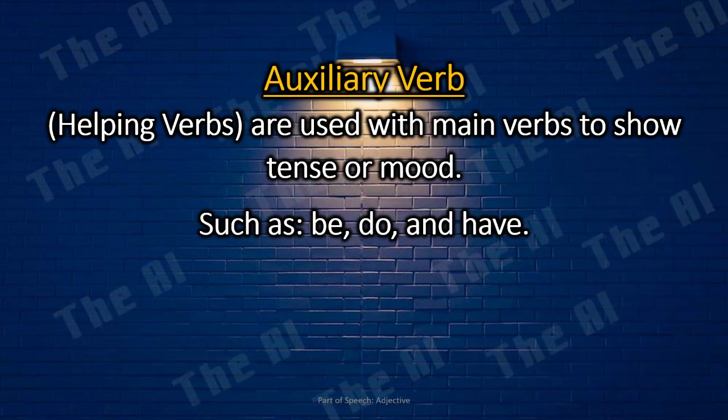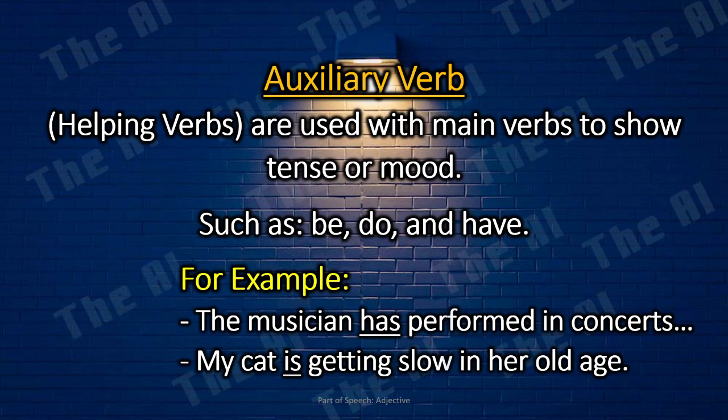The auxiliary verb. Auxiliary verbs, also called helping verbs, are used with main verbs to show tense or mood, such as be, do, and have. For example: The musician has performed in concerts all over the world. My cat is getting slow in her old age.